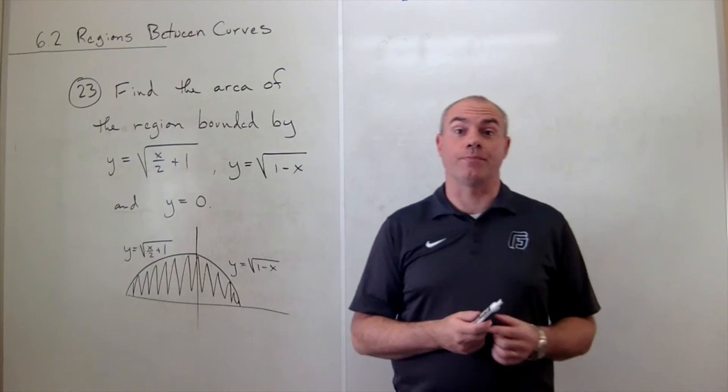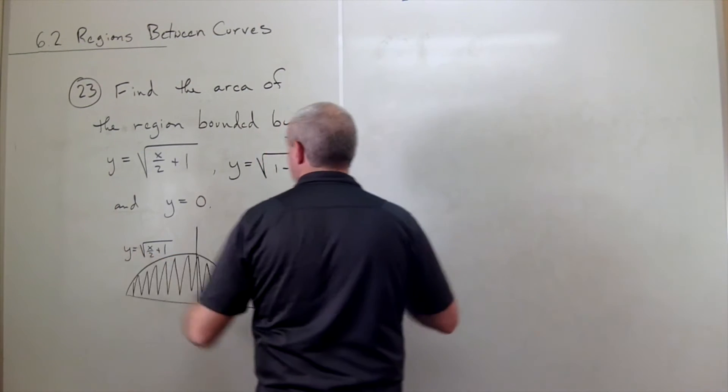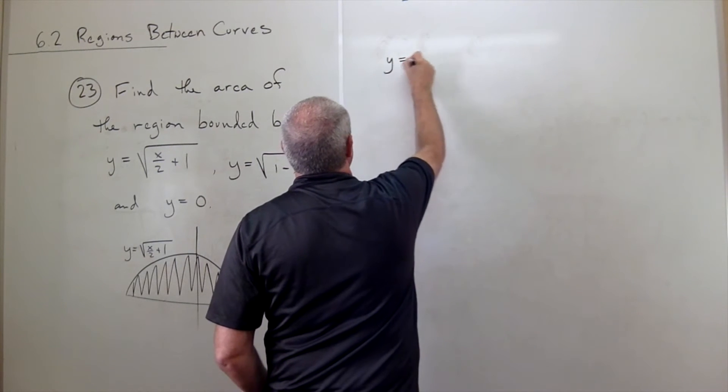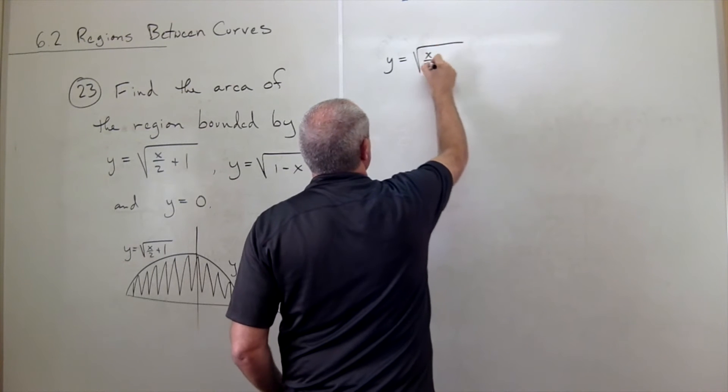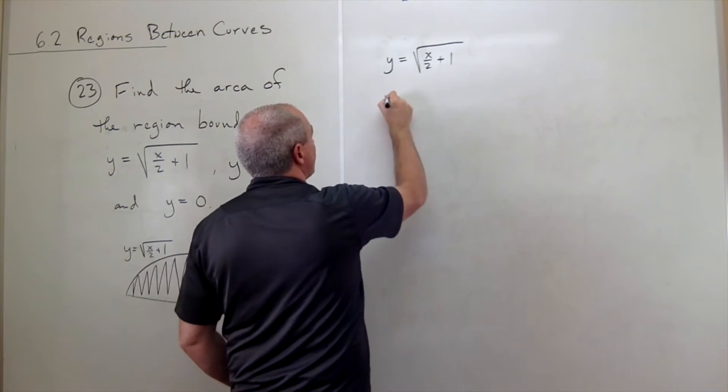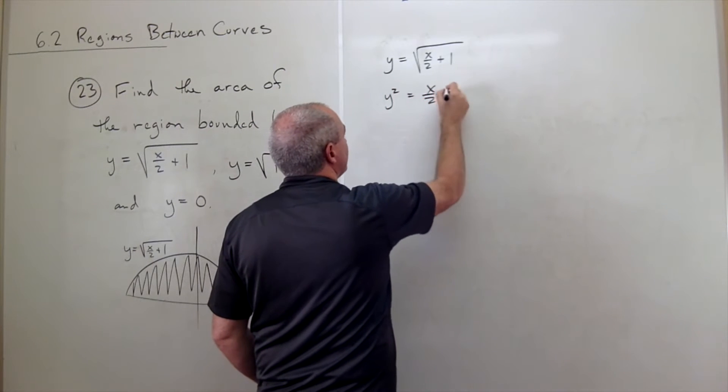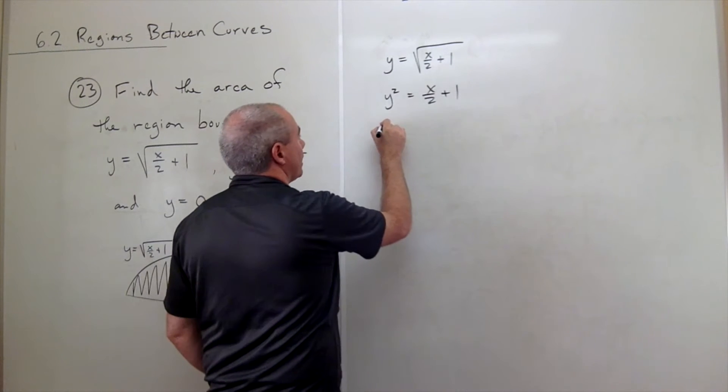So let's start out by just solving both of these guys for x. So let's look at y equals the square root of x over 2 plus 1. That's the same thing as y squared equals x over 2 plus 1 by squaring both sides.